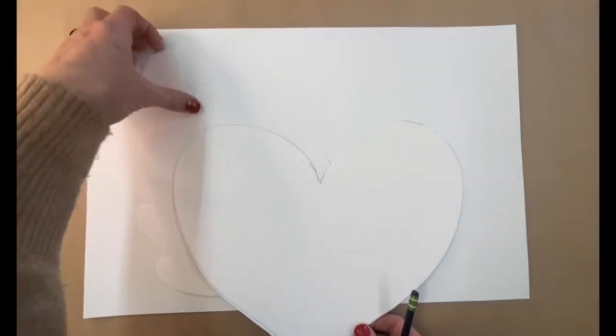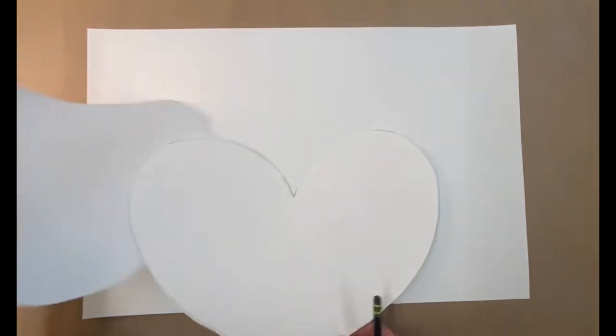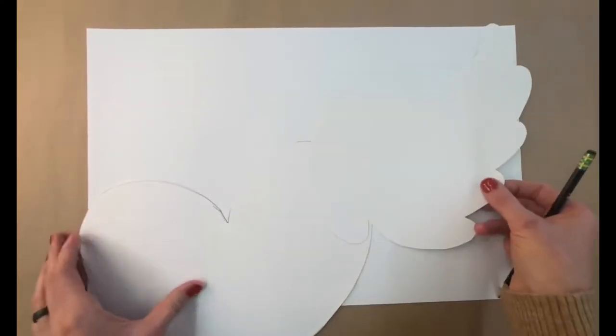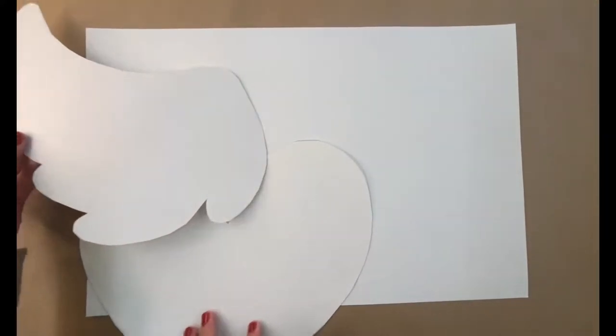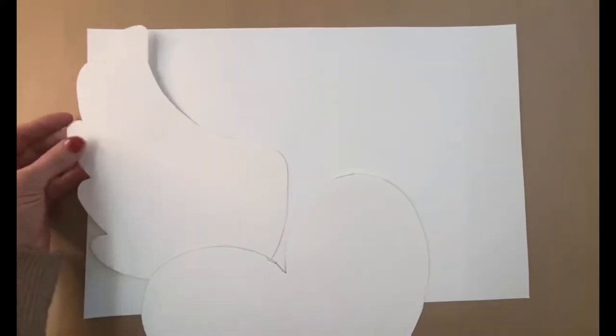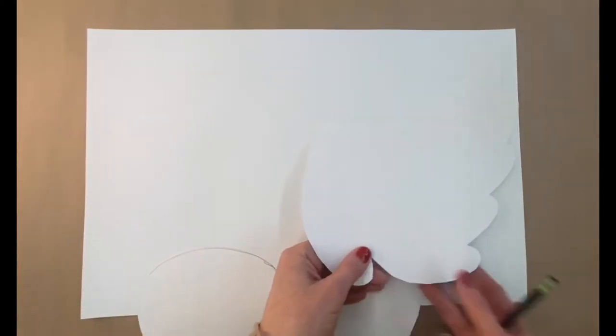So, for example, if I have a heart here, I want this wing to be in the reverse over here. I don't want both of the wings to look like a right wing, so I'm going to trace these wings one on this side and one on the other.